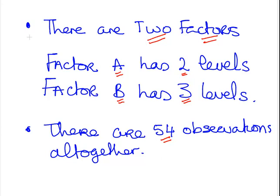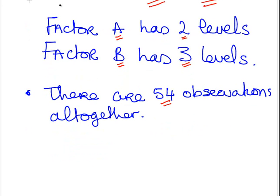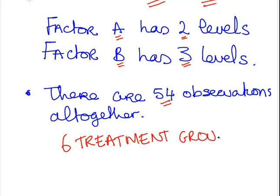So, think about that for a second. There are six treatment groups. Two by three is six treatment groups. And there are 54 observations, so nine replicates per group.